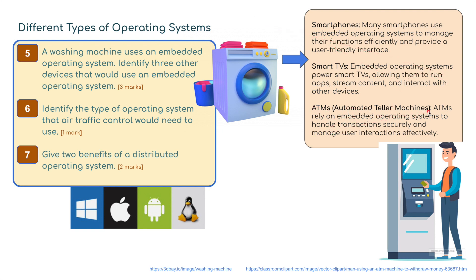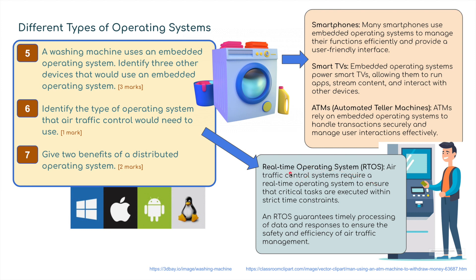Identify the type of operating system that air traffic control would need to use - one mark. This would be a real-time operating system, an RTOS. Air traffic control systems require a real-time operating system to ensure that critical tasks are executed within strict time constraints. The RTOS guarantees timely processing of data and responses to ensure the safety and efficiency of air traffic management. Things have to be done in a split second - that's where you need a real-time operating system. Just writing RTOS would get you one mark.